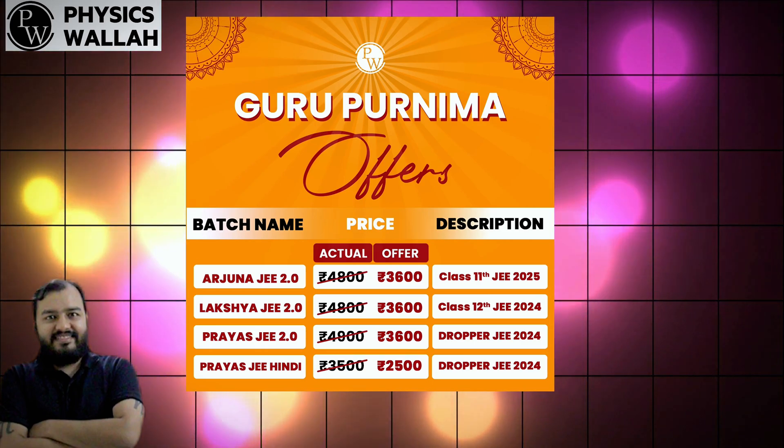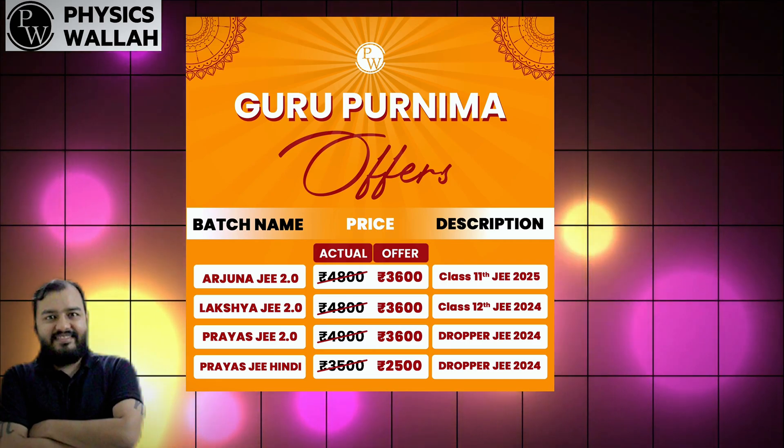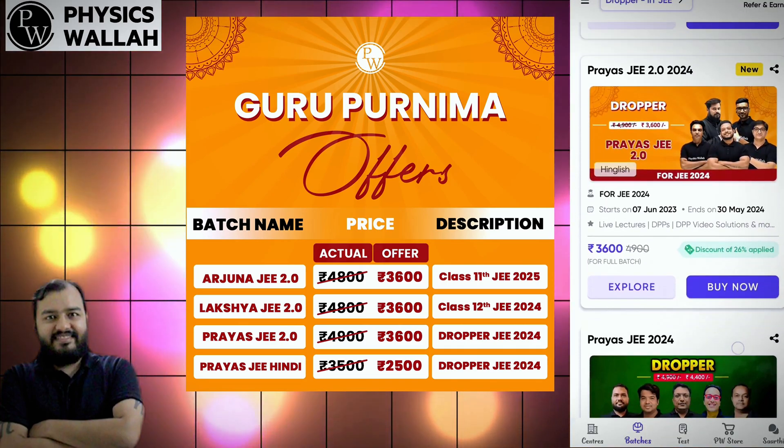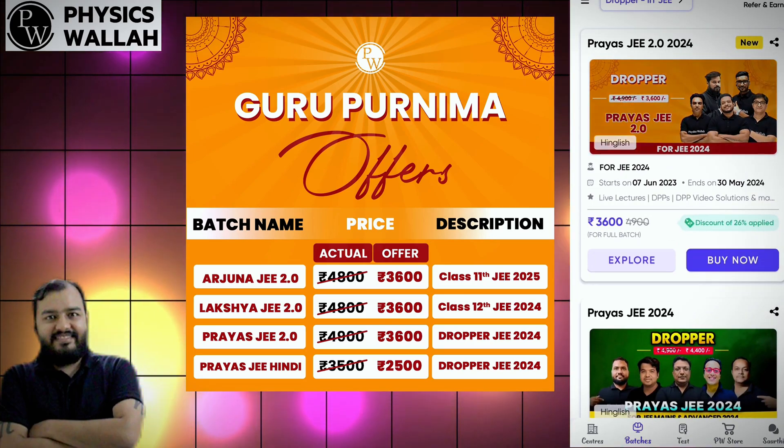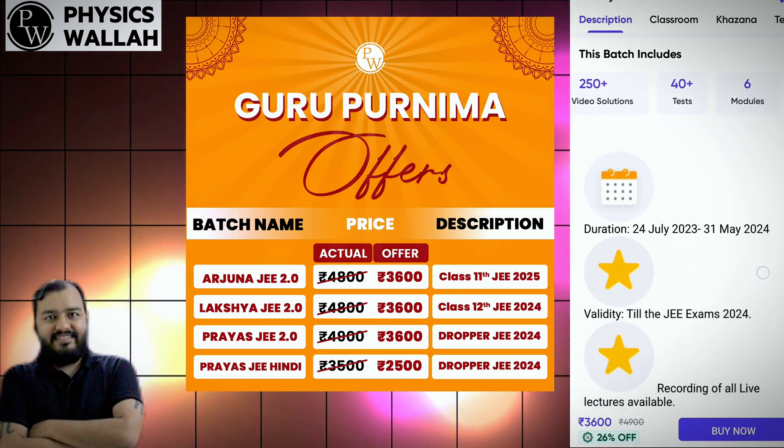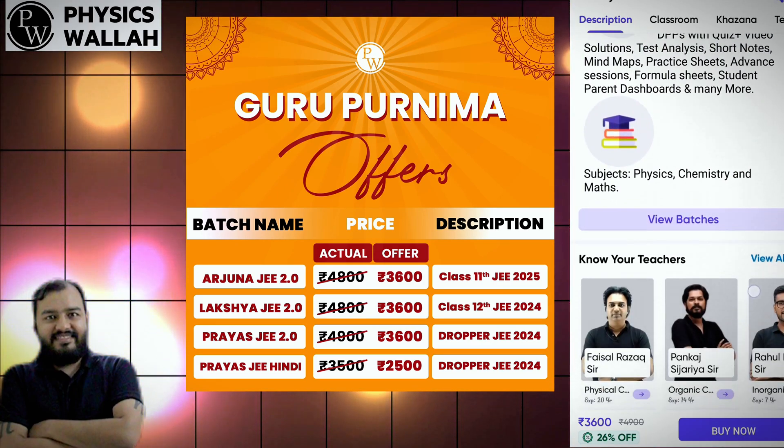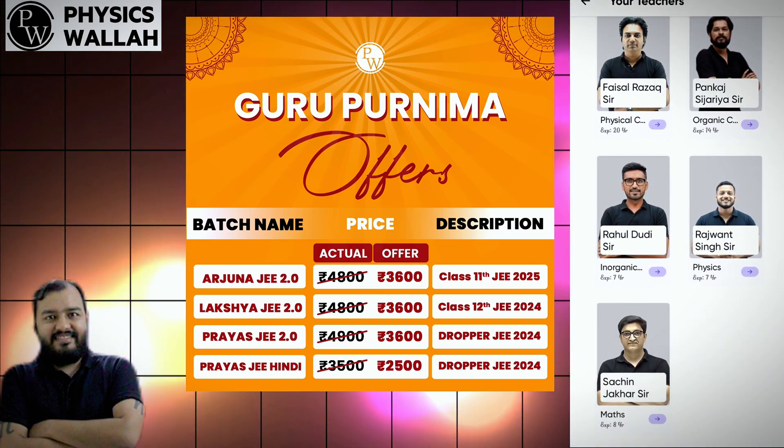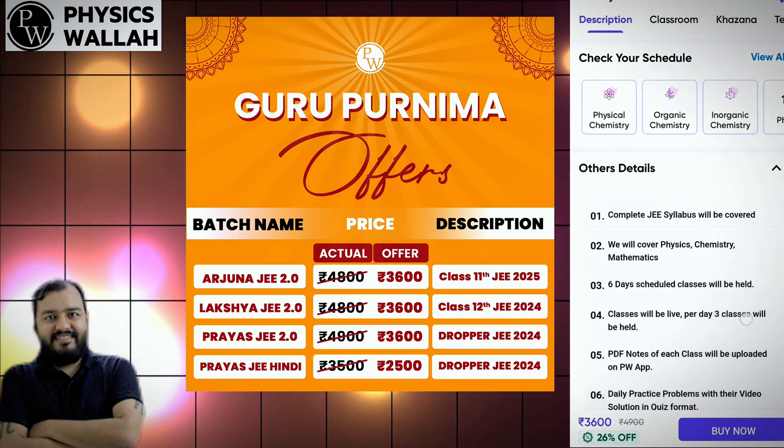और Prayas JEE 2.0 batch जो की India के strongest JEE dropper batch है जो की आपका road map होगा IIT तक का और ये batch उनके लिए है जो JEE 2024 को crack करना चाहते है। इसका price 3600 है और ये batch available है Hindi medium में भी as Prayas JEE Hindi जो सिर्फ available है 2500 के price पे।